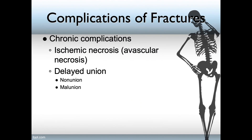Chronic complications include ischemic necrosis, also known as avascular necrosis or AVN — death of tissue from lack of blood flow due to absence of blood vessels in that area — as well as delayed union, where the bones never grow back together (non-union), or the bones grow back poorly together, known as malunion.